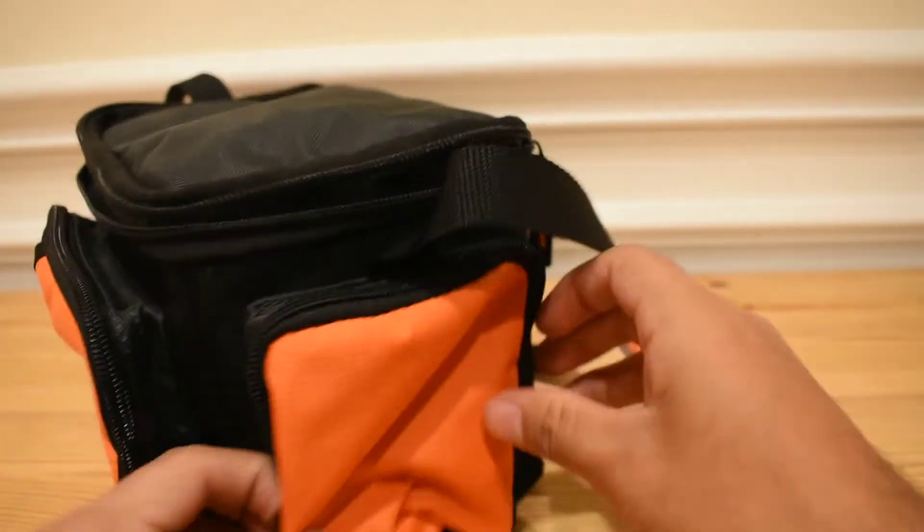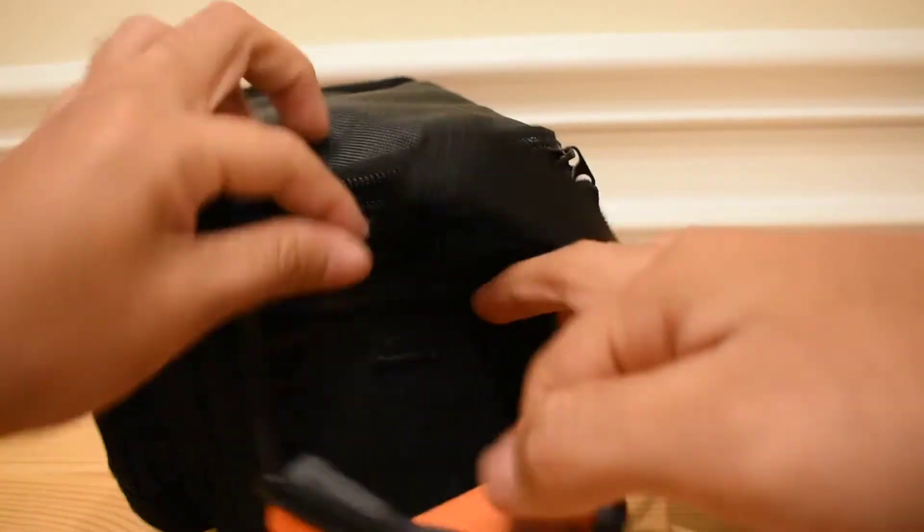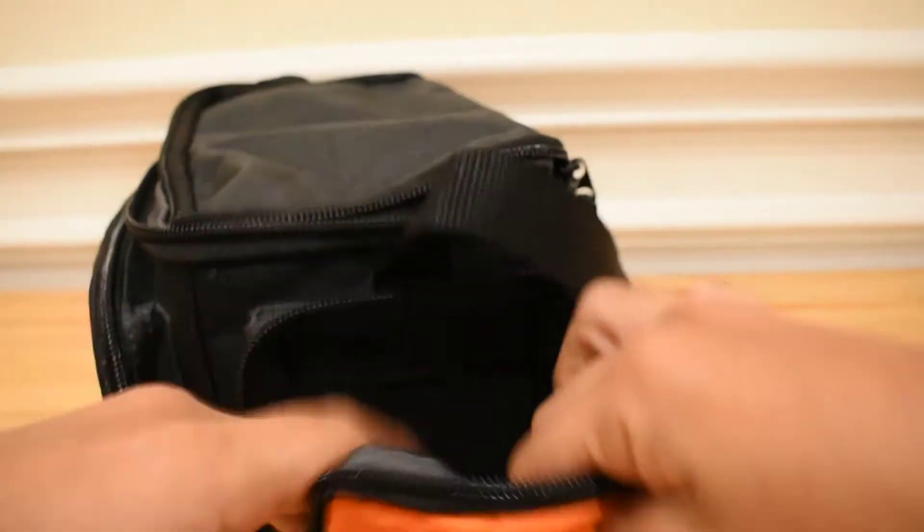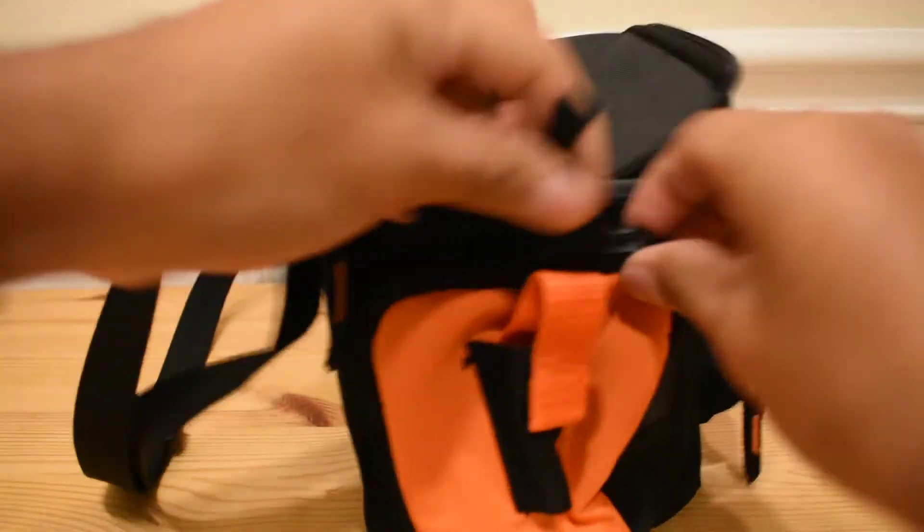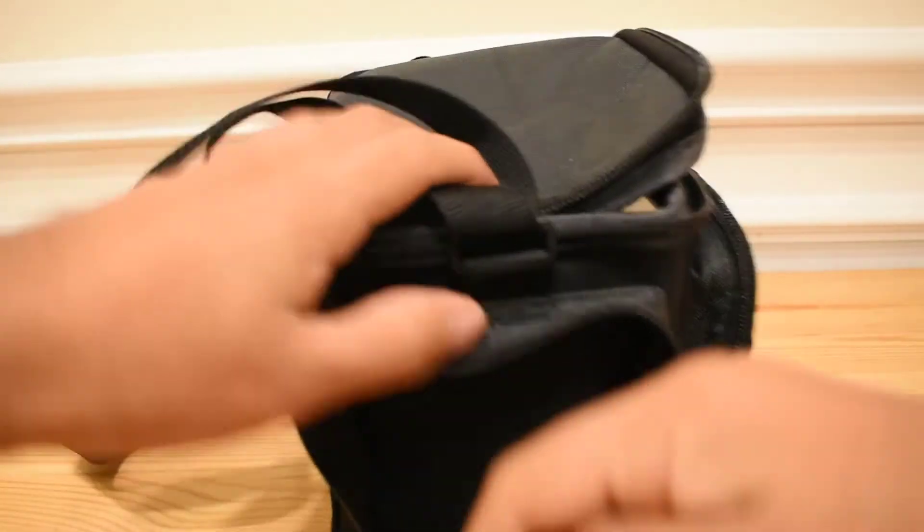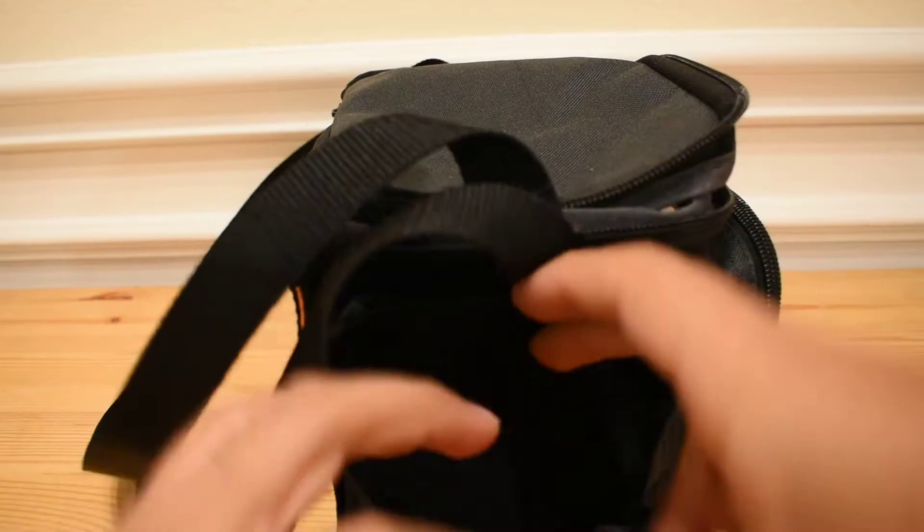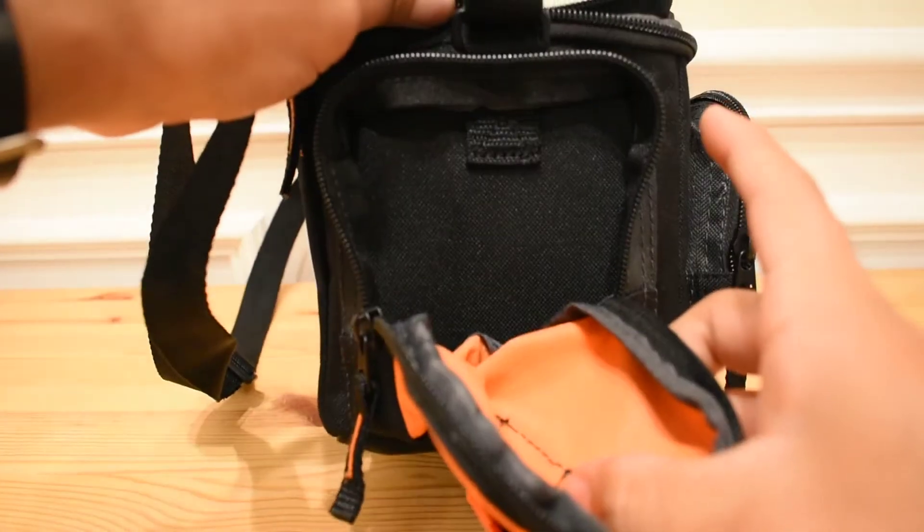You have a side pocket on each side. Now these pockets are pretty small, but you could put like some extra line, a couple of tools in there, maybe some lures. You have one on this side, you have one on this side. This side also has the same size on the inside.